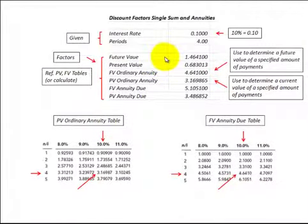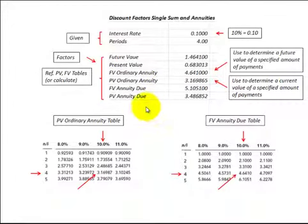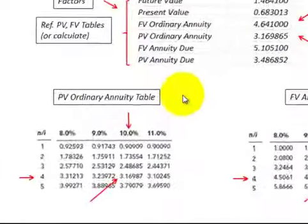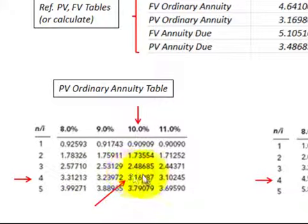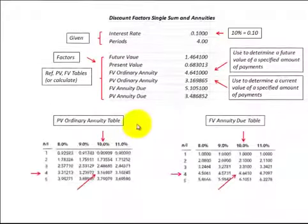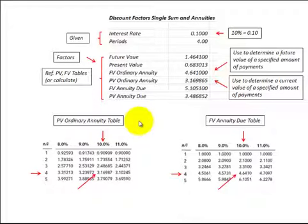In this presentation we're going to use discount factors for future values, present values, and annuities to determine the length of a loan or how many annuity payments we have to make to earn a certain amount of money. We'll use discount factor tables referencing the interest rate, calculate the discount factor, and determine the number of periods. We'll also show how this can be done with an Excel program or a financial calculator.